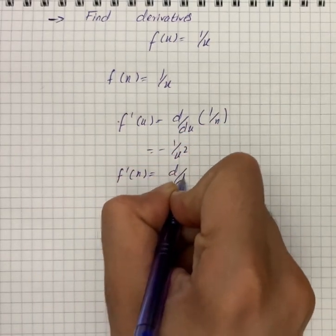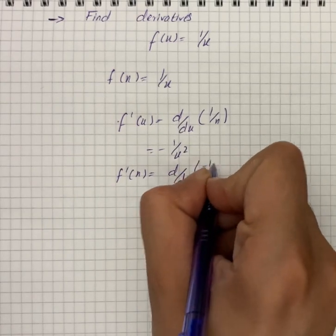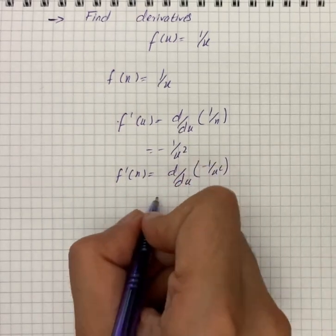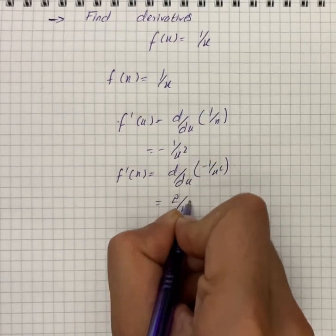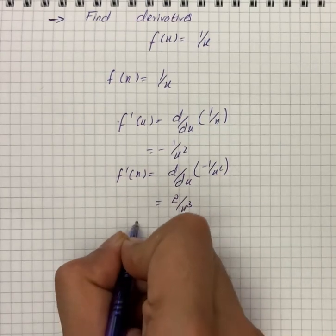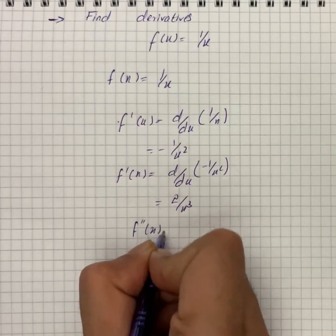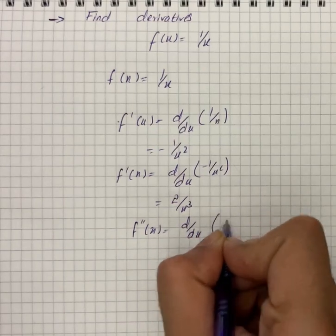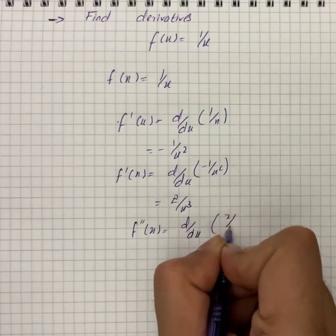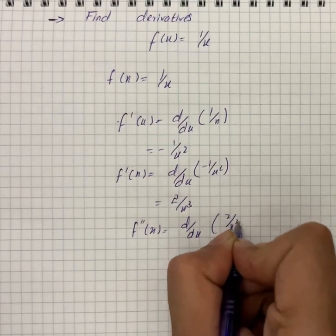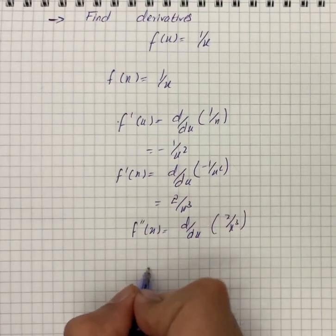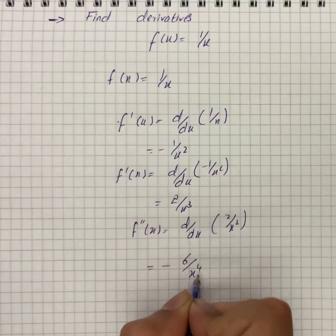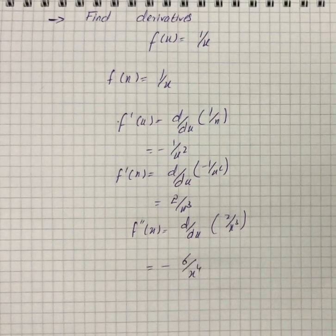So f''(x) = d/dx of -1/x², which gives us 2/x³. Then f'''(x) = d/dx of 2/x³, which gives us -6/x⁴ as our solution.